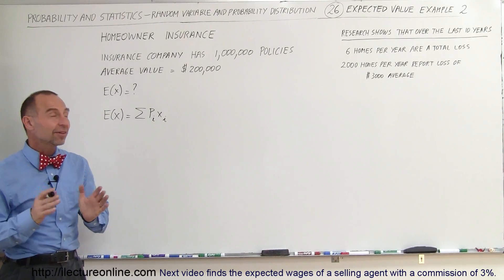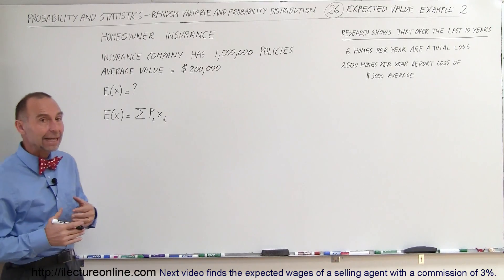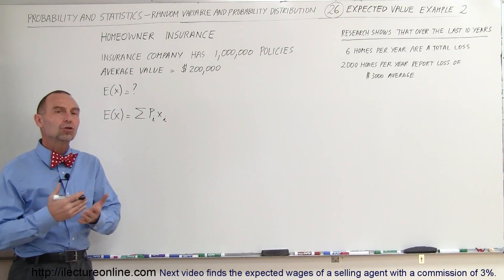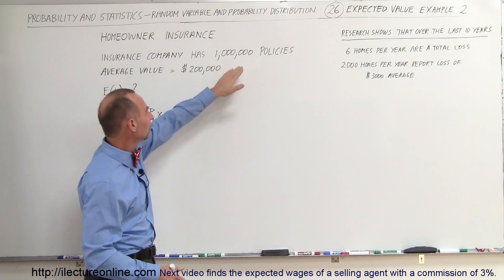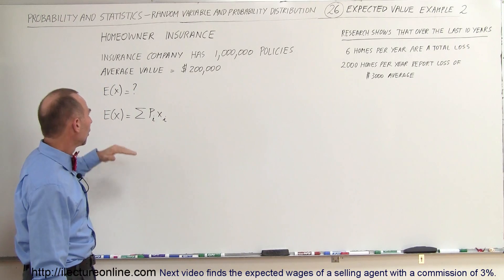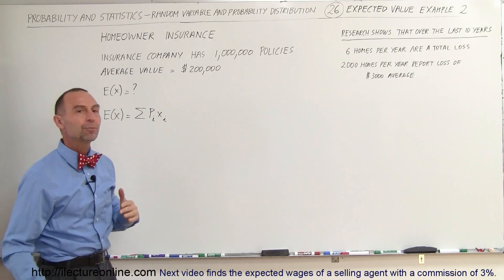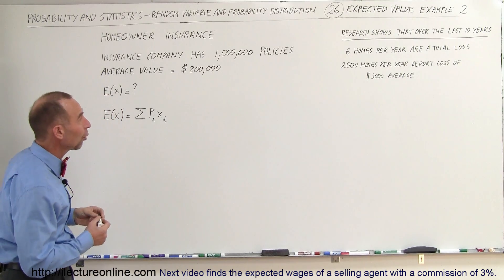Welcome to Lecture Online. In this example, we're going to show you how to find the expected value for an insurance company that insures homes. Let's say that they have a million policies. The average value of the homes they insure is $200,000. What would be the expected value of the premium that you want to charge homeowners to get insurance on their home?